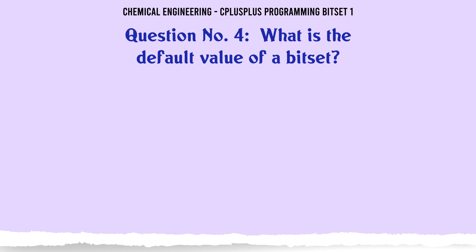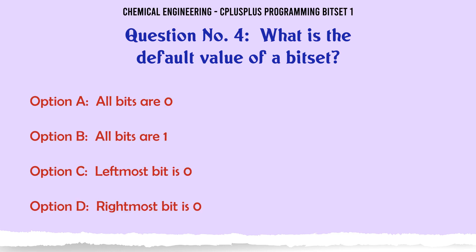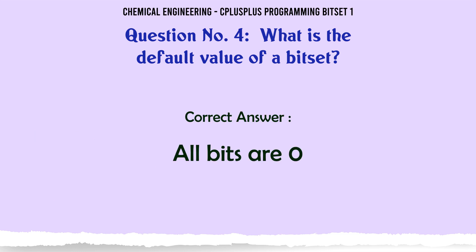What is the default value of a bitset? A. All bits are 0. B. All bits are 1. C. Leftmost bit is 0. D. Rightmost bit is 0. The correct answer is all bits are 0.